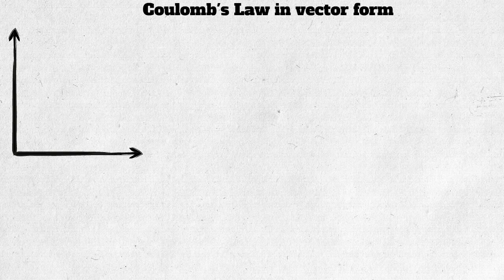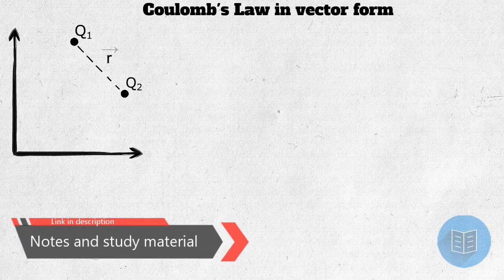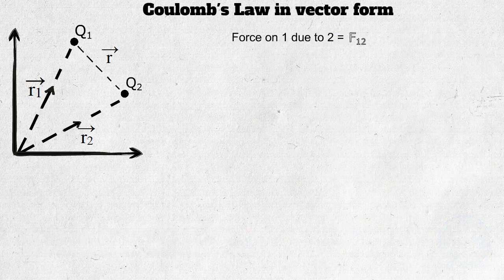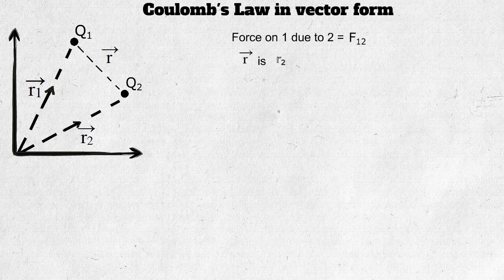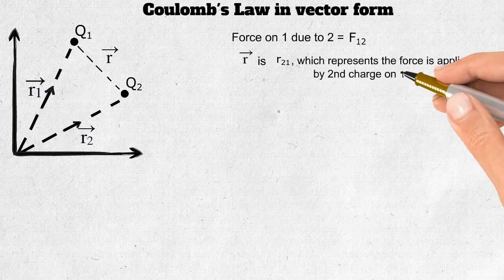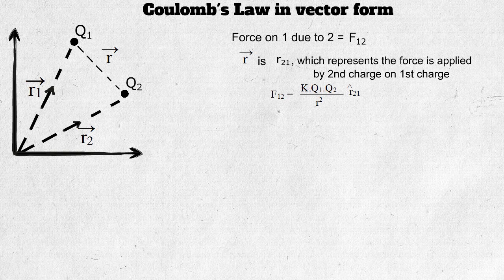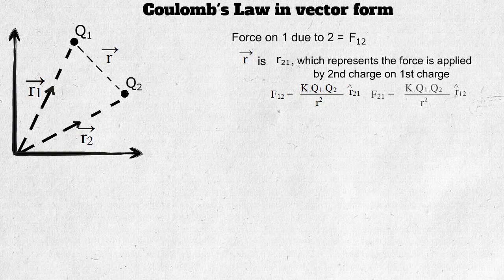Coulomb's law in vector form: take two charged particles q1 and q2 separated by a distance r. The position vectors for both particles are r₁ vector and r₂ vector. The force on the first particle due to the second is F₁₂, and the relevant displacement vector is r₂₁. Force on first due to second equals k·q1·q2 / r² × r̂₂₁. Force on second due to first equals k·q1·q2 / r² × r̂₁₂.